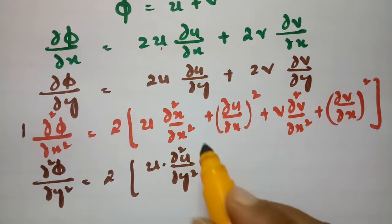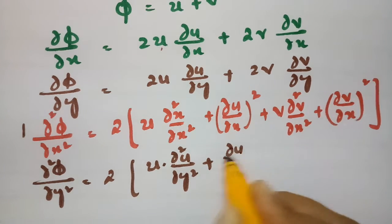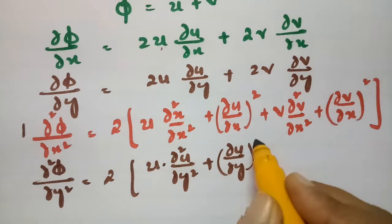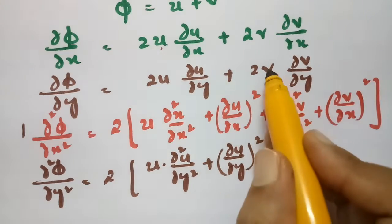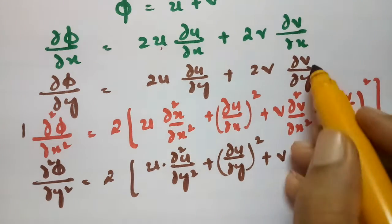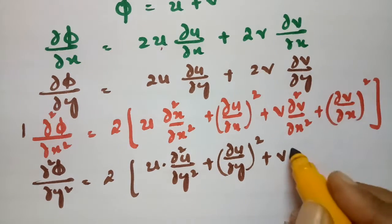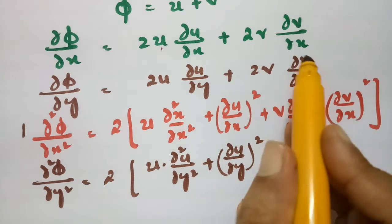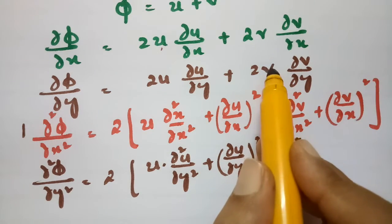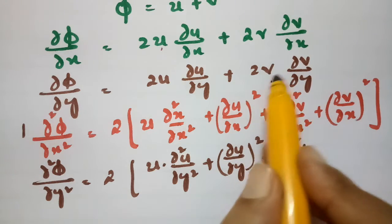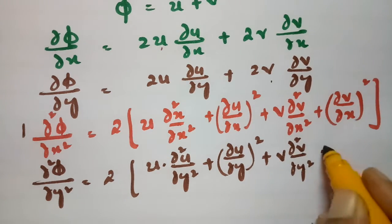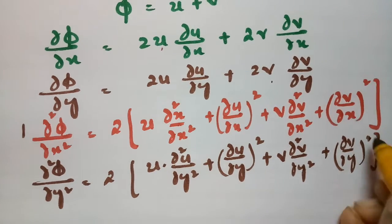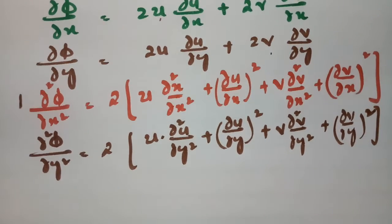Similarly the double derivative with respect to y gives ∂²φ/∂y² = 2[u·(∂²u/∂y²) + (∂u/∂y)²] + 2[v·(∂²v/∂y²) + (∂v/∂y)²].